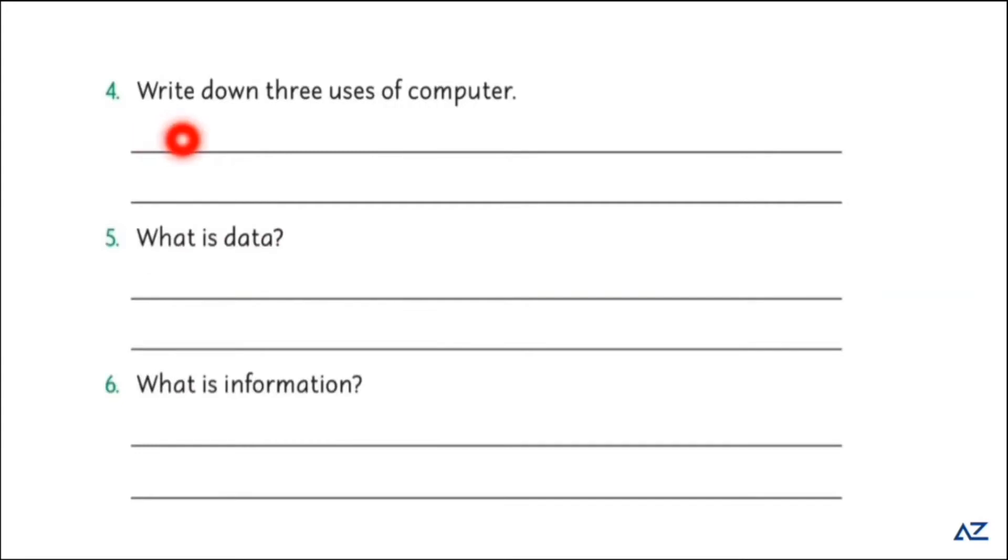Write down three uses of computer. Number one, you can play games. Number two, you can watch cartoons and movies. And number three, you can do your homework on your computer. What is data? Data kya hota hai? Data are characters or information which may be alphabetic or numbers or both.